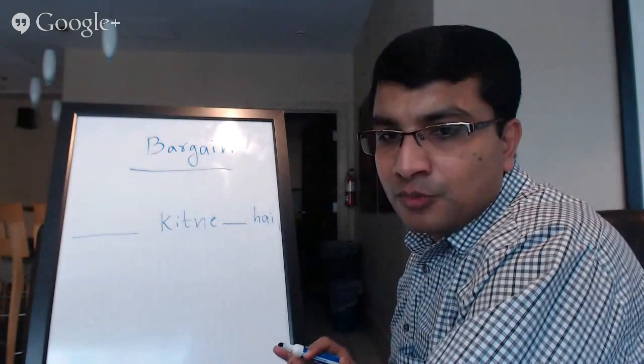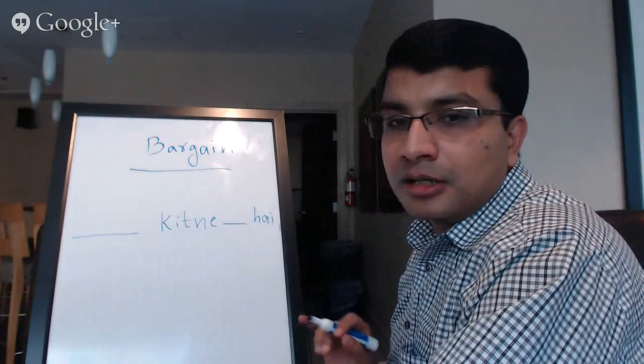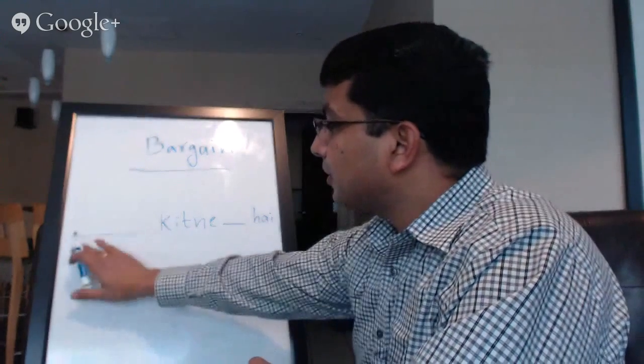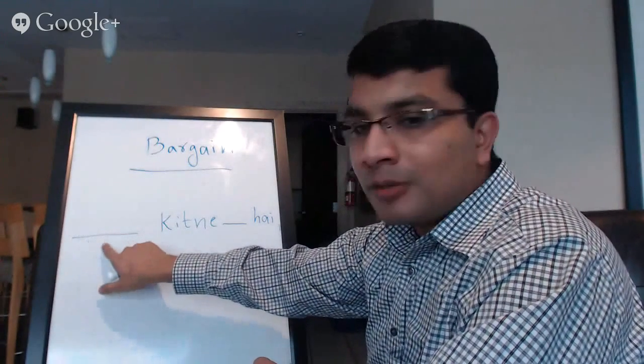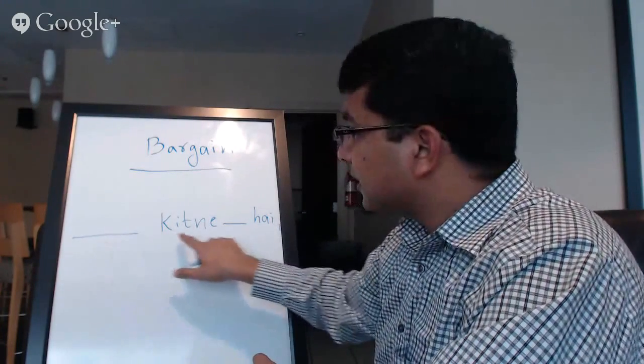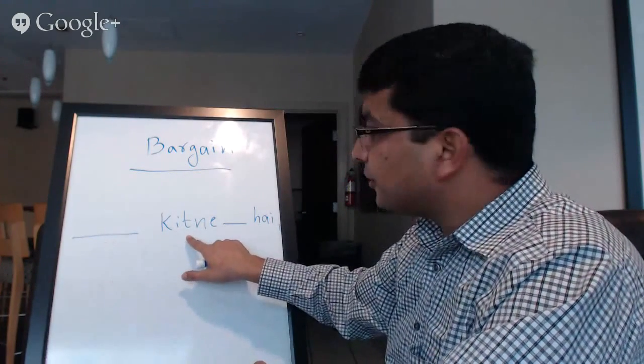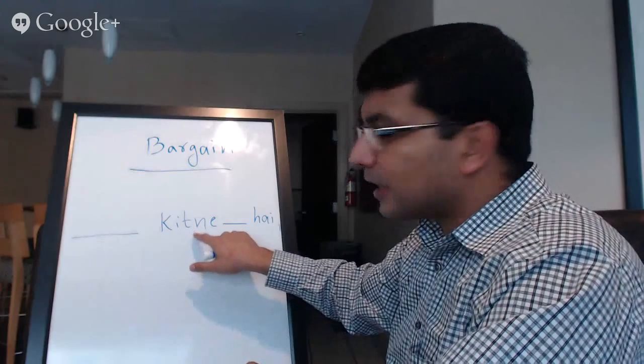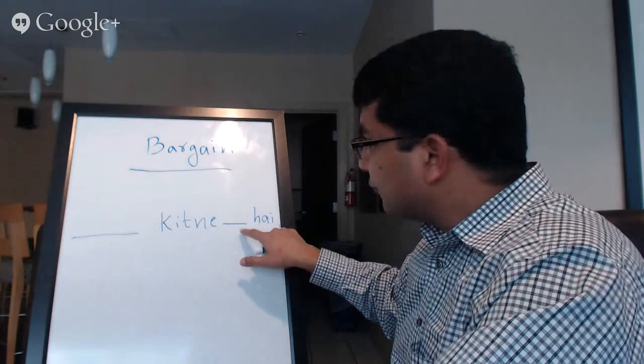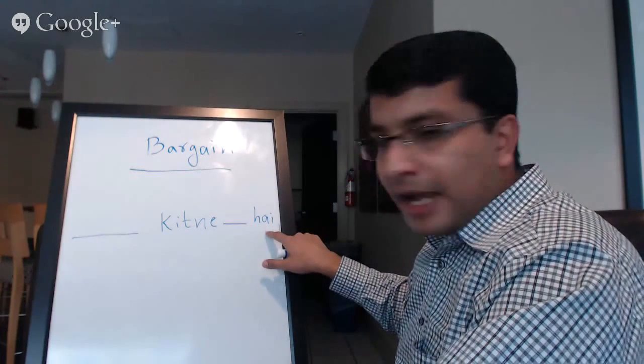So that's the formula for finding the price of anything in Hindi. You have the place where you have your object or a product you are interested in finding the price. And then your interrogative Kitna, which becomes Kitne here because it is followed by a post position.